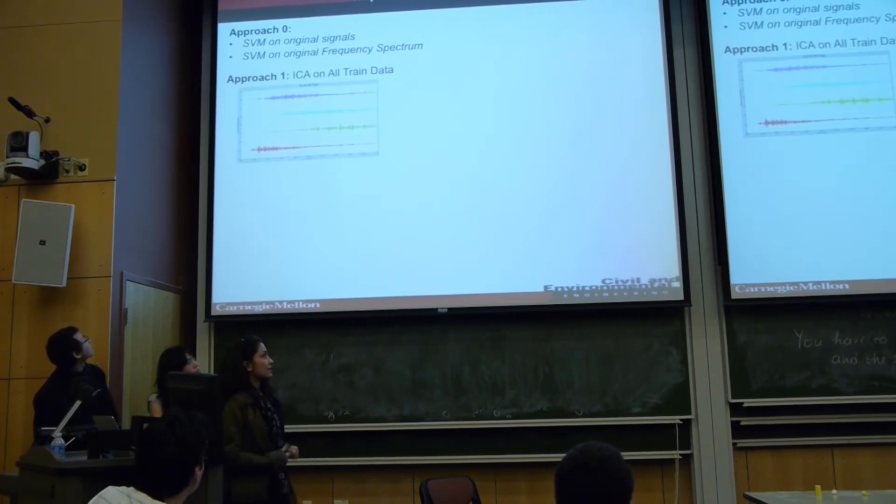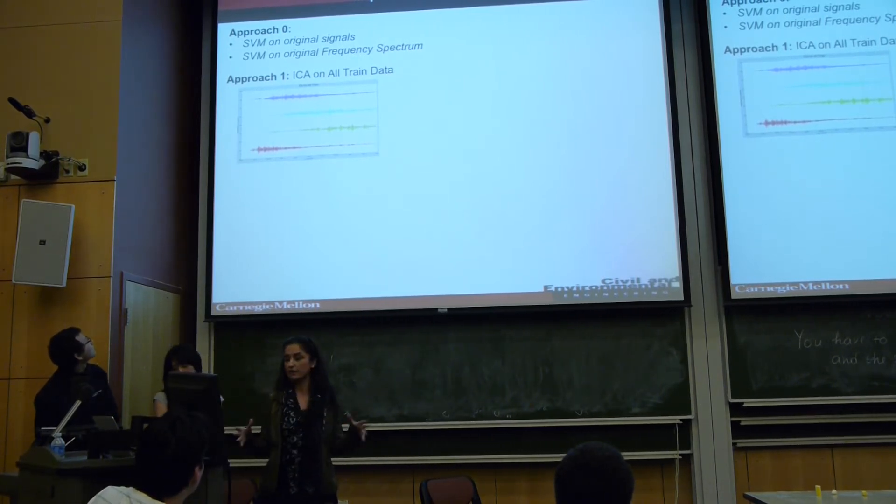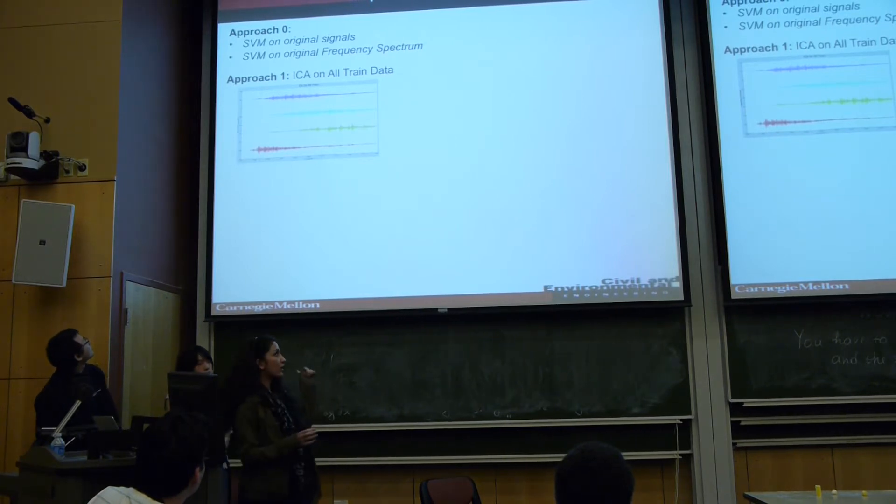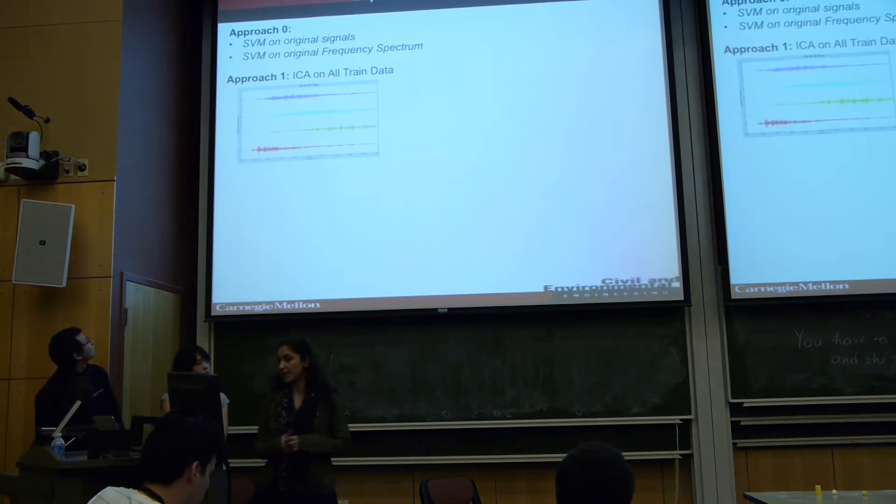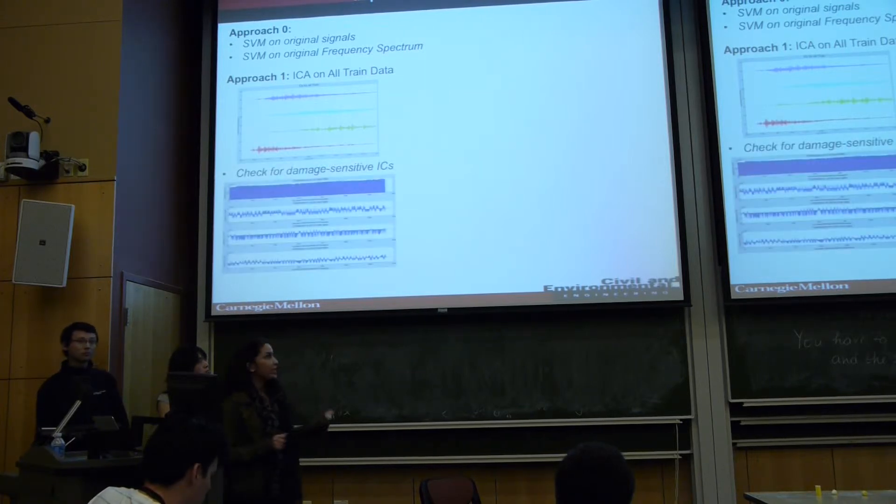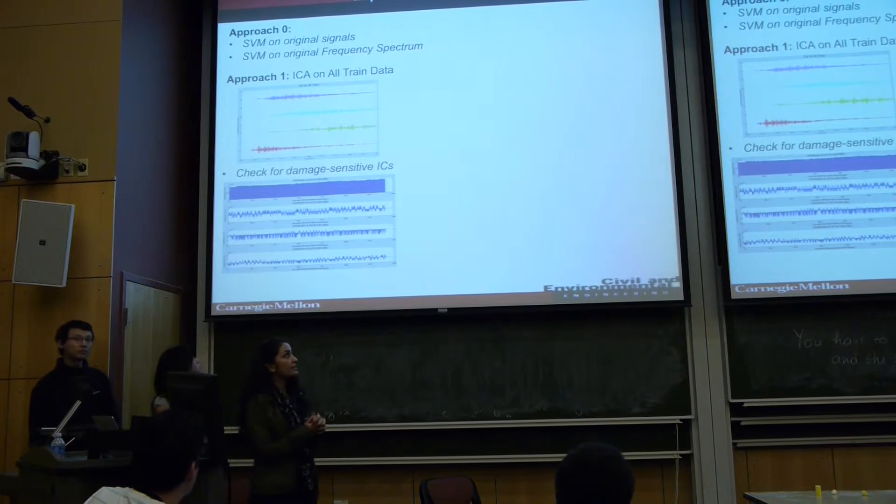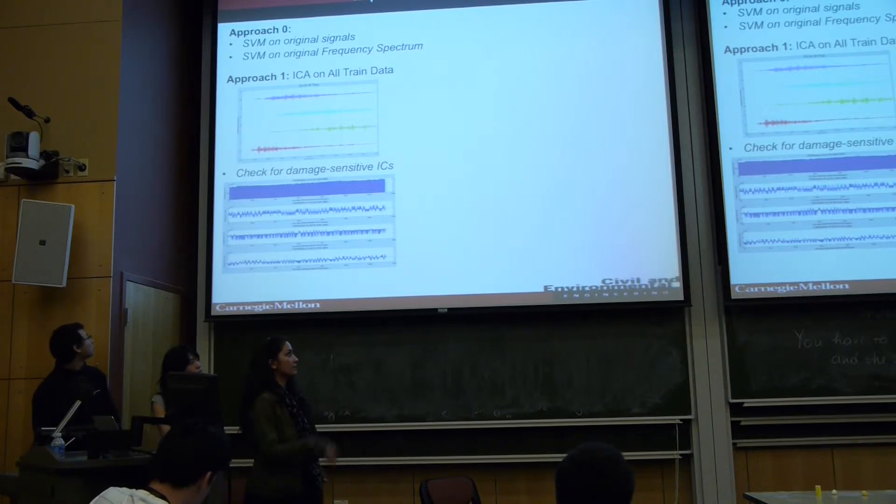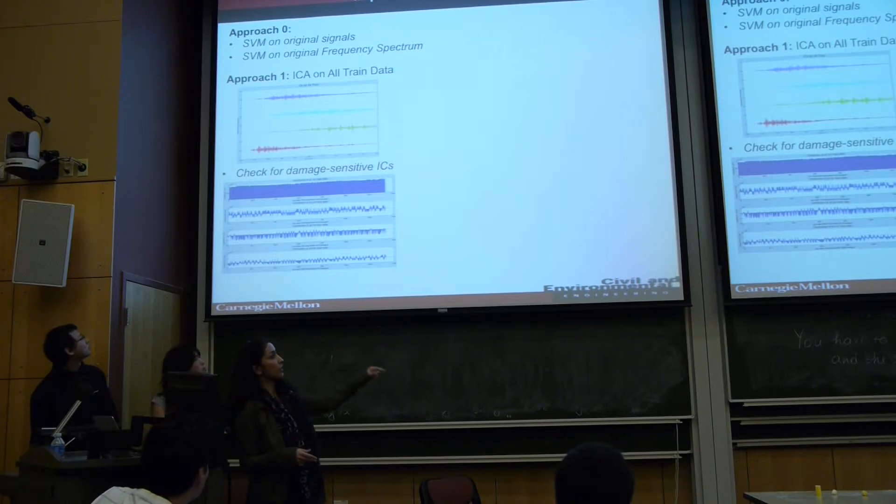So approach one was just applying the ICA on all the train data. And this is the four ICs, independent components that you get. So we first check to see if there is any damage sensitive ICs. From the class, you know that the A mixing matrix columns are actually the coefficients. This, you see the four coefficients of those components.